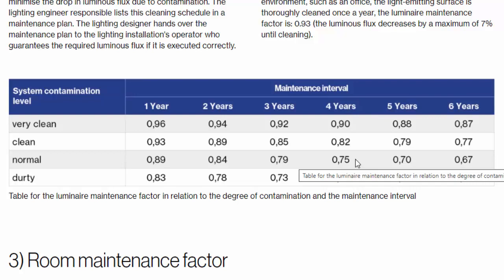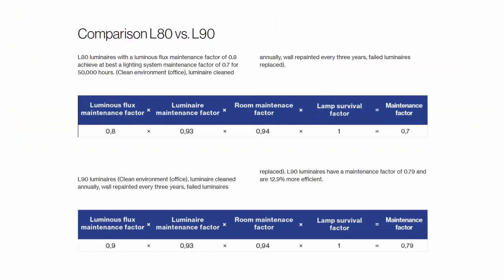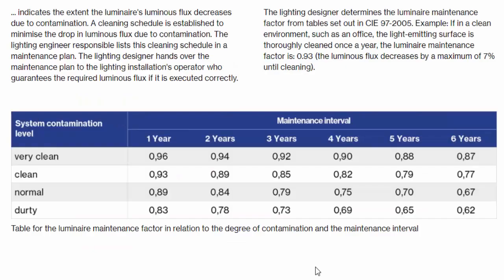To summarize: if you're using LED indoors, you can use 0.9, or 0.8 as a very safe standard value. For outdoor LED, such as sports lighting, 0.85 is fine even in dirty environments. For road lighting, use 0.7 or 0.75 because roads accumulate a lot of dust every day.